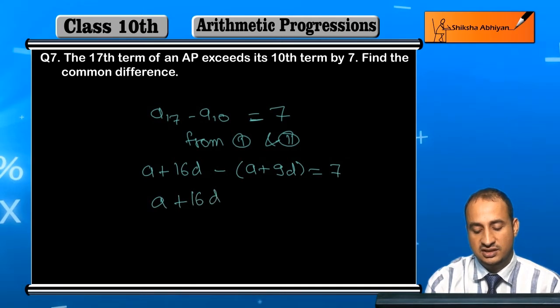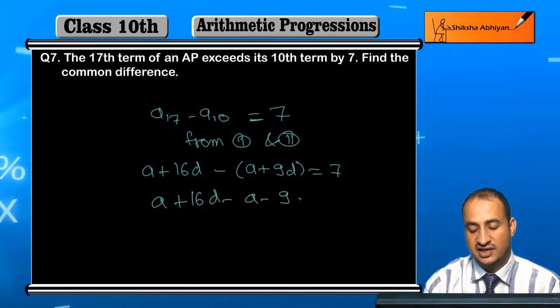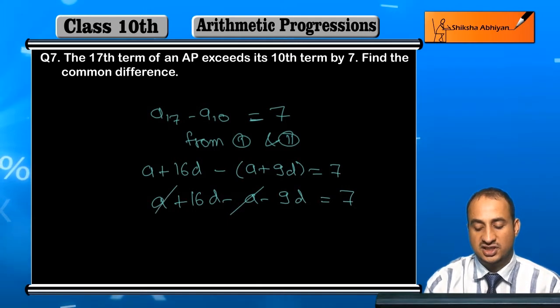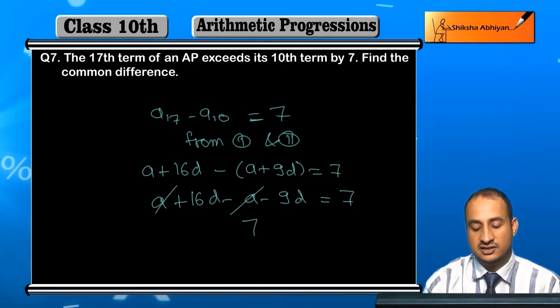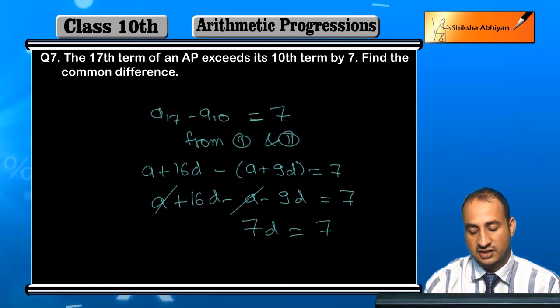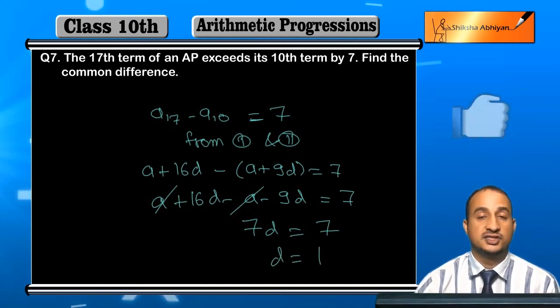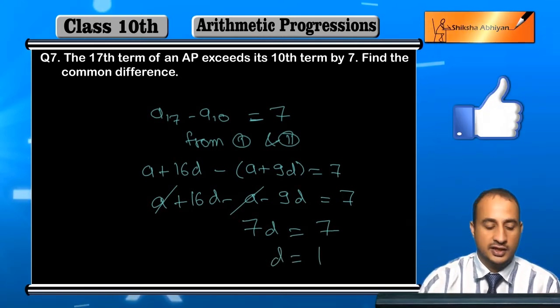So here we have A plus 16D minus A minus 9D equals 7. Here A cancels out, 16D minus 9D is 7D equals 7, and hence D is equal to 1.